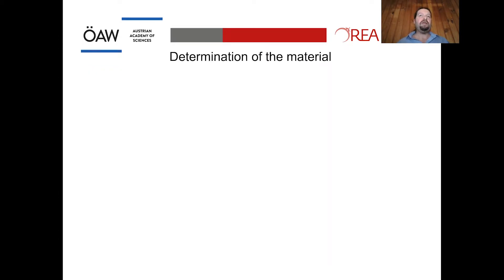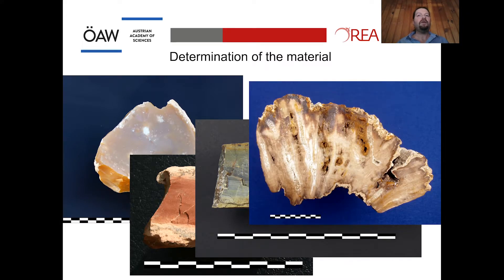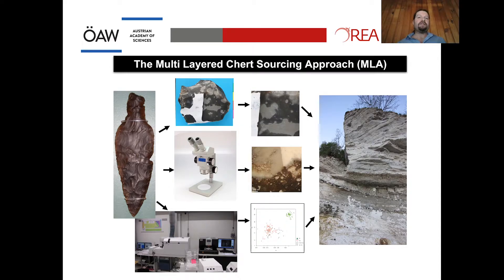The first step is the determination of the used materials. There are various raw materials that can be used, and standardized, well-established analytical methods exist for determining their nature. Provenance studies, on the other hand, are entirely different — there is no single method one can use to establish the origin of a lithic artifact. We always need a combination of methods, which we term the multi-layered chert sourcing approach, combining macroscopic, microscopic, and geochemical analysis.